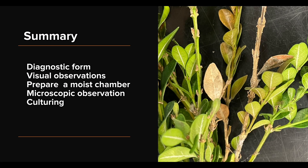To summarize, the process starts by reviewing the diagnostic form and visually observing the samples for symptoms and signs. If no symptoms and signs are observed, the samples are placed in a moist chamber. If symptoms and signs are visible, they are further inspected under a microscope. Lastly, the samples are cultured for disease identification.